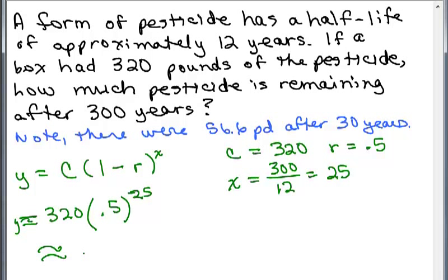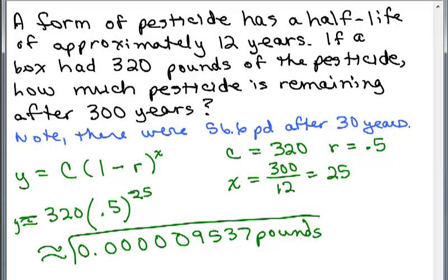It is really minuscule. So I'm going to go out this many decimal places. One, two, three, four, five zeros, and then it's 9537. As you can see, it's practically nothing after 300 years. Actually, I went all the way out to what my calculator went to. If you were going to round to five places after the decimal, you would just have 0.00001, et cetera. So that's how the half-life problems are done.